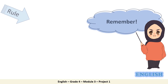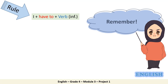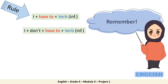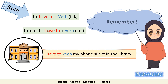Please remember the following when you want to give rules. To form a sentence, you need to start with I + have to + verb in the infinitive form, which is the base form without adding anything to the verb. But if you want to give the negative, you would say I + don't + have to + the verb in the infinitive form. Look at the example. Read with me: I have to keep my phone silent in the library.